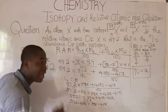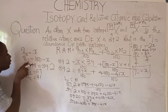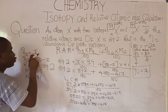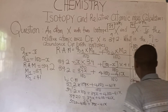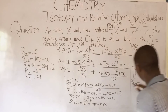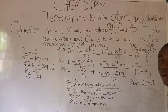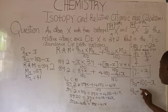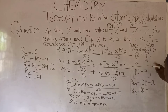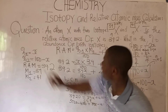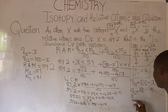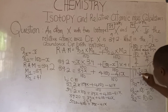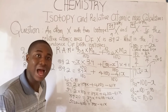So x equals 90. This x belongs to percentage 1 — recall, percentage 1 is x. So percentage 1 = 90%. For percentage 2, we use 100 minus x: 100 − 90 = 10%. So we have percentage abundance of the first isotope as 90% and percentage abundance of the second isotope as 10%.